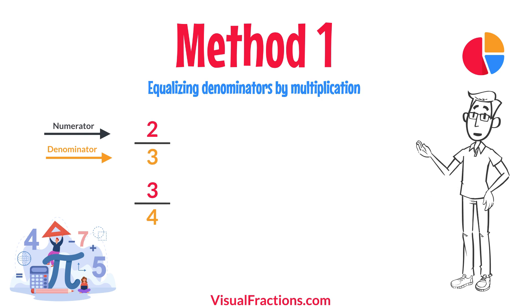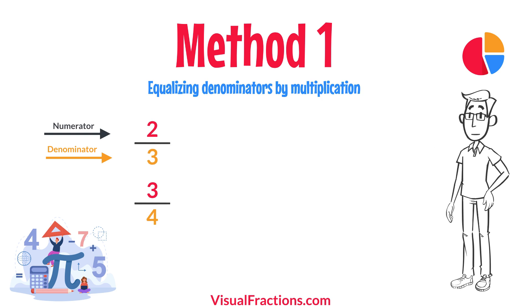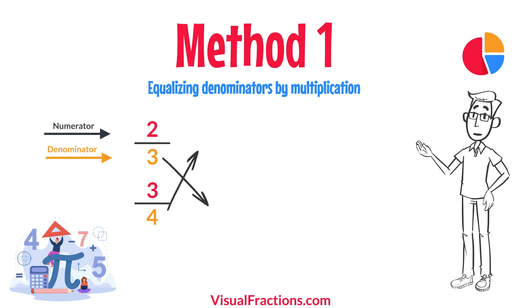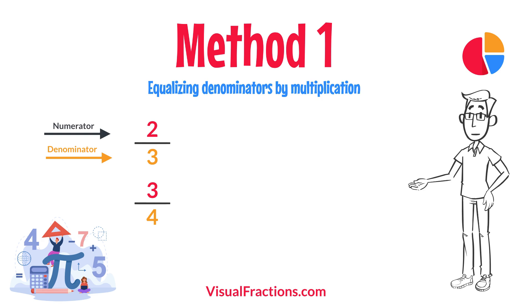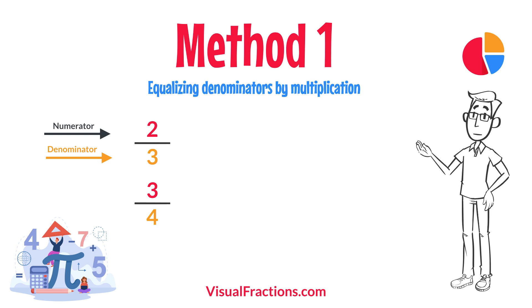First, let's equalize the denominators by multiplying each fraction's numerator and denominator by the other fraction's denominator. This method works by using the denominators of each fraction to create a common denominator, allowing us to compare the fractions directly.